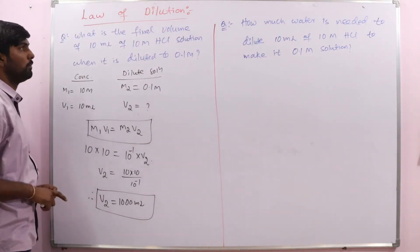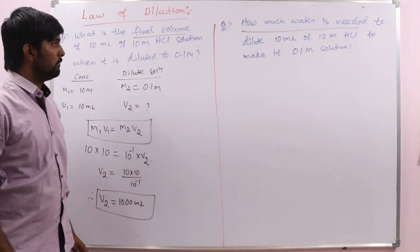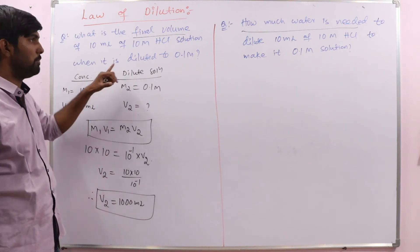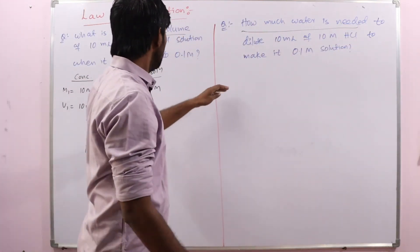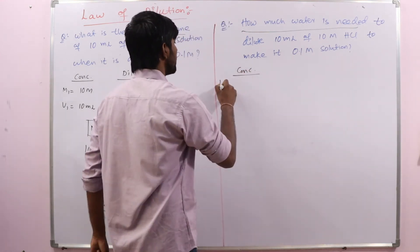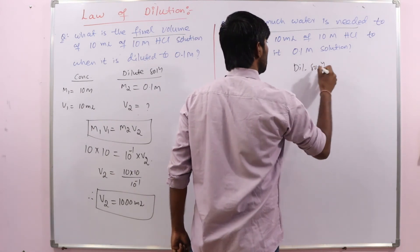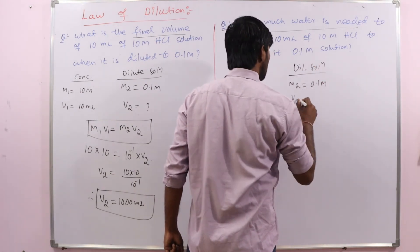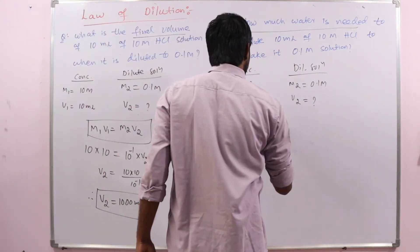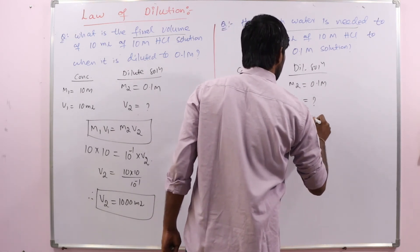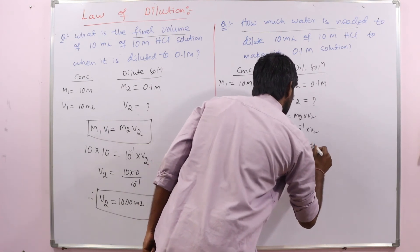The only difference between the two problems: Problem 1 asks for the final volume, while Problem 2 asks how much water is needed. With the same information, the question can be asked in two ways — very important to be careful. For the concentrated solution: M1 = 10 molar, V1 = 10 mL. For the dilute solution: M2 = 0.1 molar, and V2 is unknown. Applying M1V1 = M2V2: 10 × 10 = 10⁻¹ × V2, giving V2 = 1000 mL.